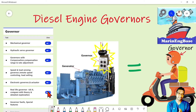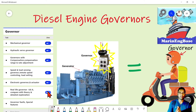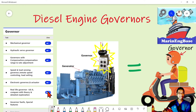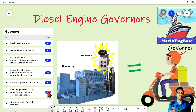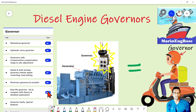Finally we will discuss the real-life governor. I will use the UG8 governor cross-section and match it with the theory we have already learned, comparing the actual governance arrangement with theory. Then governor faults and special features will be discussed.